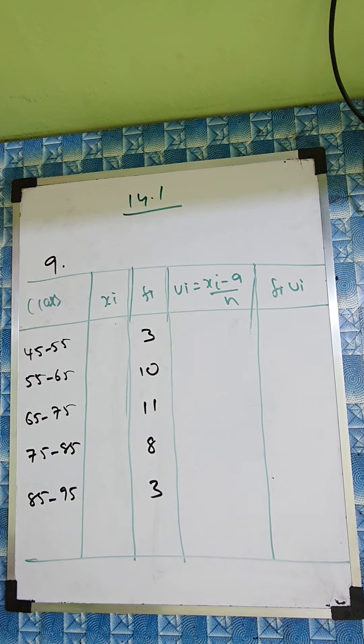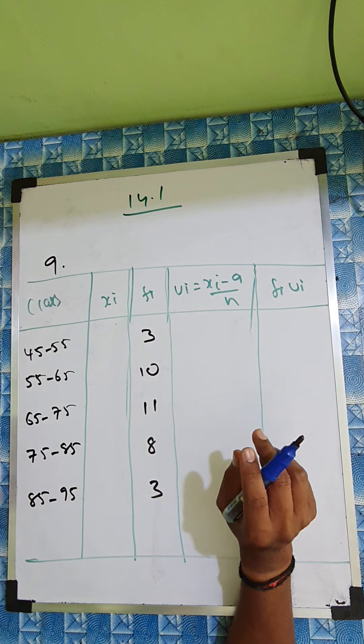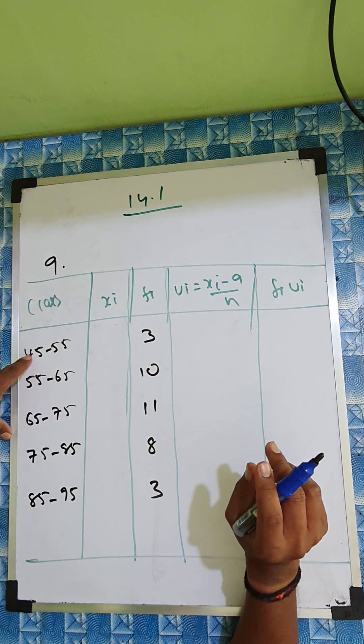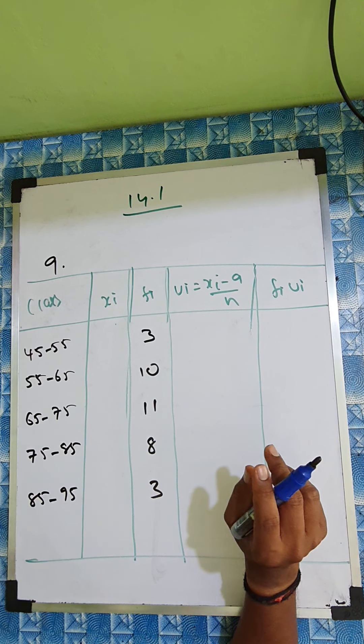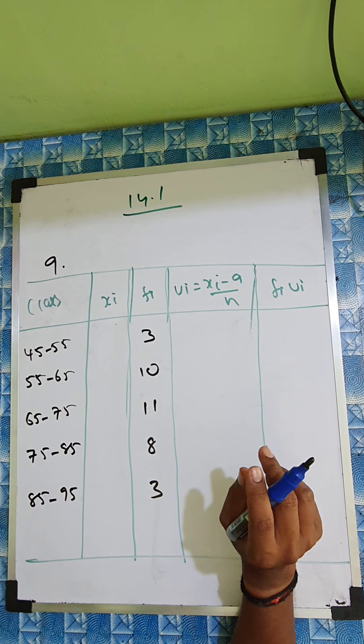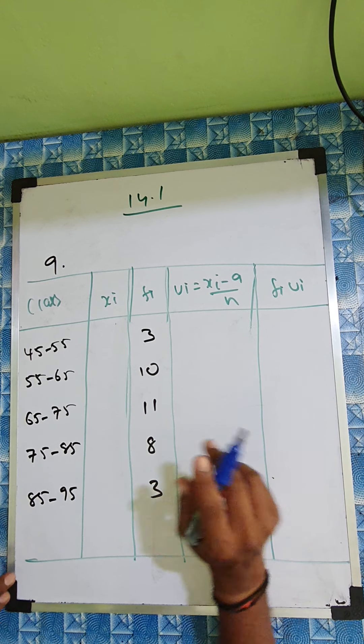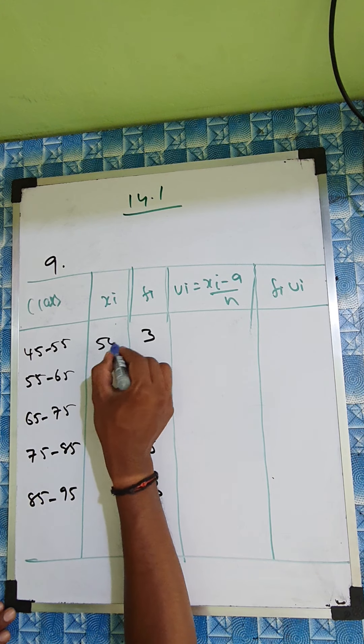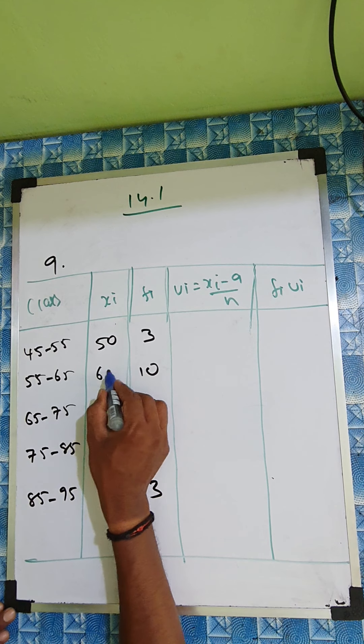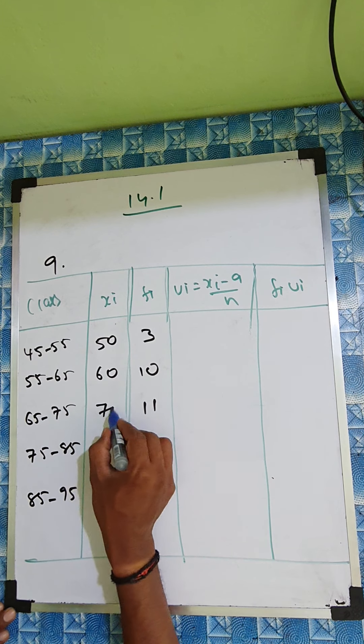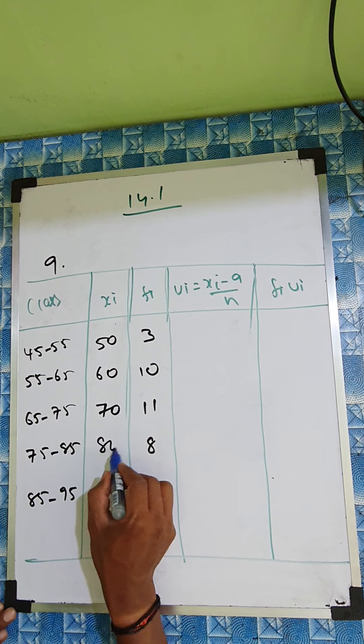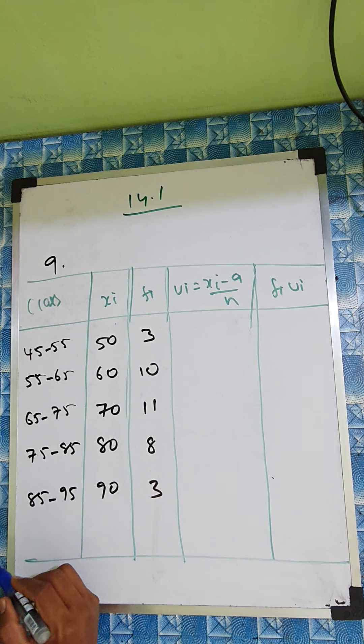So 45 and 55 midpoint value. I already told you the other method we'll do. We'll subtract first this one: 55 minus 45 is 10, 10 divided by 2 is 5. That 5 will add with all the first numbers. So 45 plus 5 is 50. 55 plus 5 is 60. 65 plus 5 is 70. 75 plus 5 is 80. 85 plus 5 is 90.